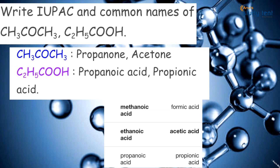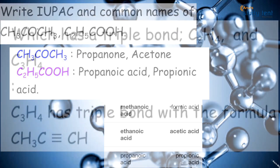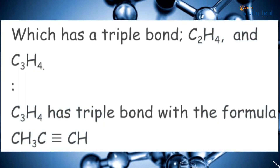For 1 carbon in the carboxylic acid group, it is called methanoic acid, and the common name is formic acid. For 2 carbon atoms, it is called ethanoic acid, and the common name is acetic acid.